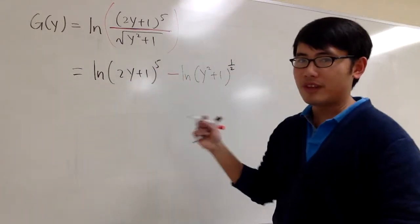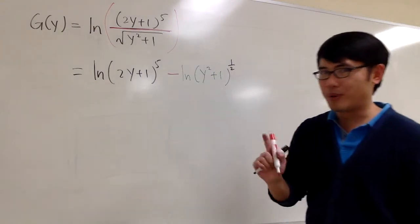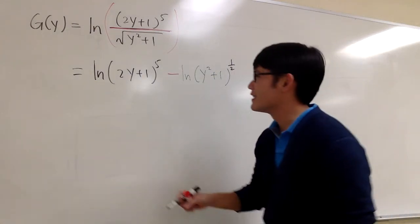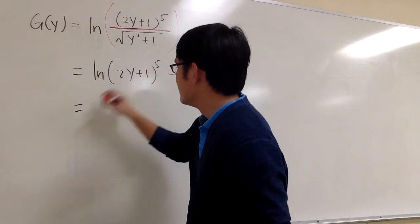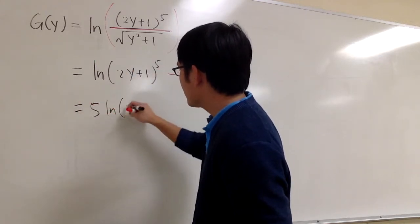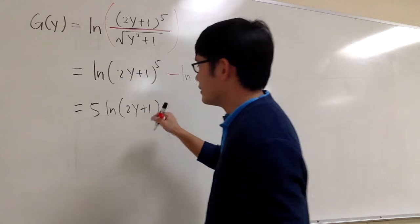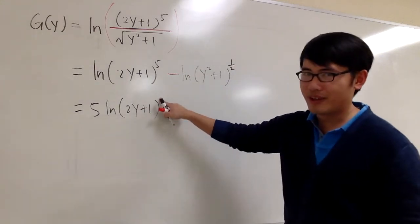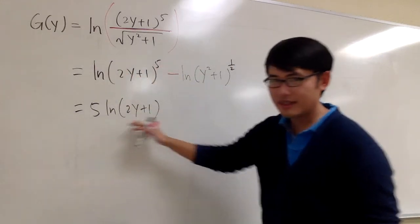This is by one of the log properties. It's not the power rule when we're doing the derivative. So this is going to be 5 natural log of 2y plus 1. Don't put a 4. Do not put a 4 right here. Just bring the power to the front. That's it.